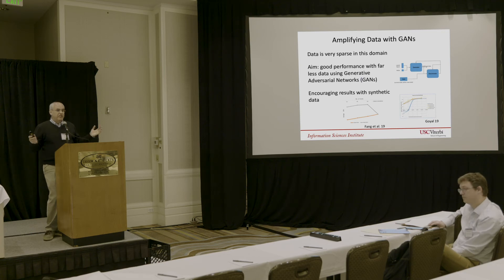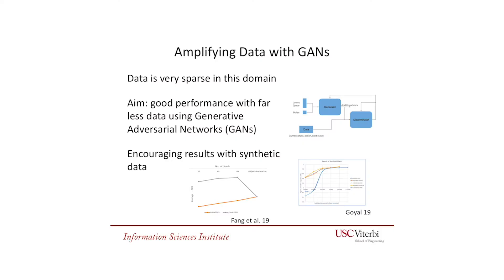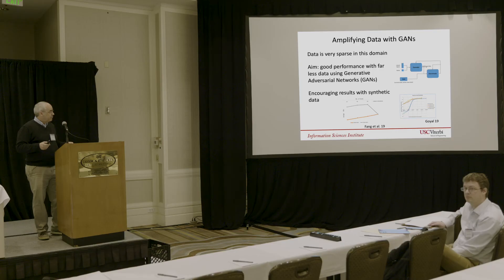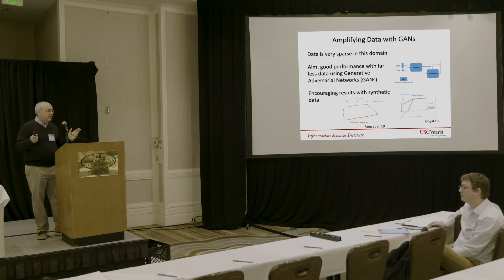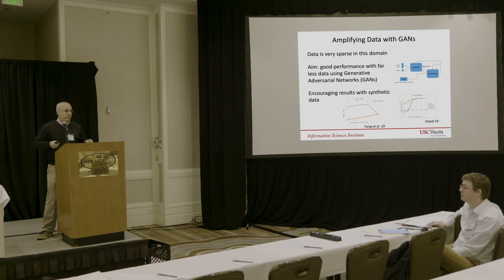Another problem is that data is very sparse in this domain—smugglers are secretive and don't want us to know what they're doing. So we don't have enough data to run those decision-focused learning algorithms very effectively. Emilio Ferrara and his students have been looking at ways to amplify the data we do have using generative adversarial network techniques. We take the examples we're learning from and generate many more plausible examples showing what attackers might be doing in other portions of the sea or in different weather conditions. They've shown that with just a tiny fraction of the original data they can get to within 80 to 90% of the original performance, and with about half the data they can match the original performance.